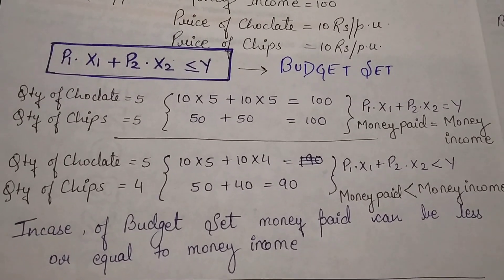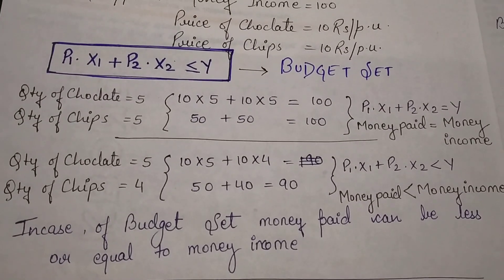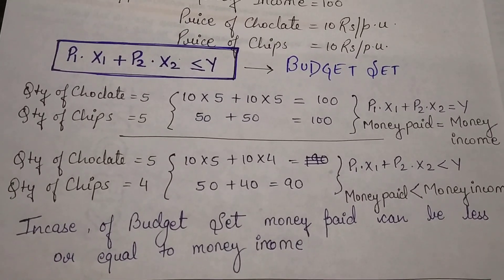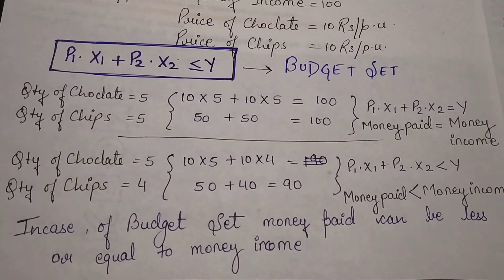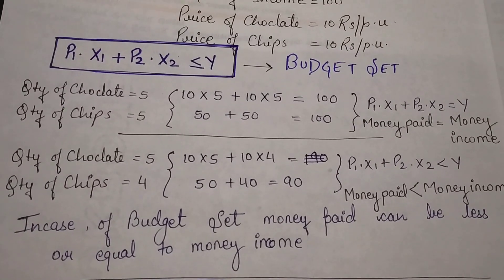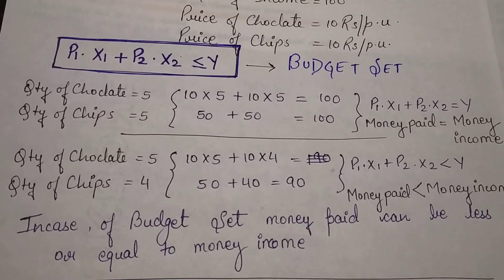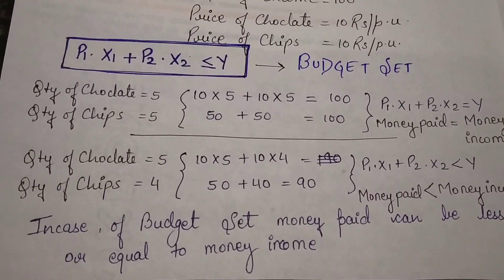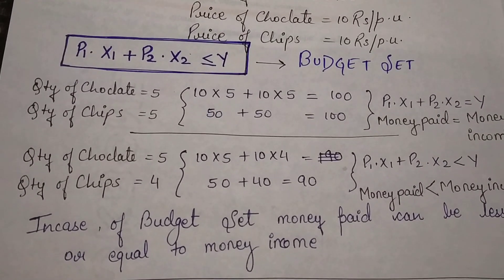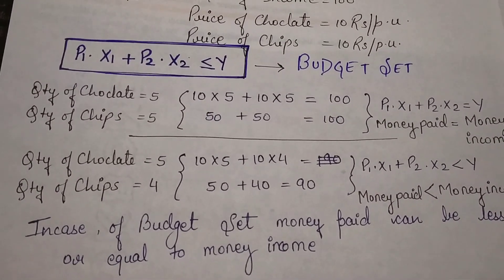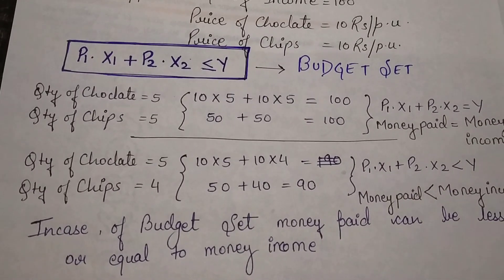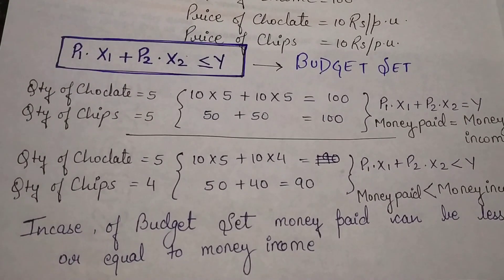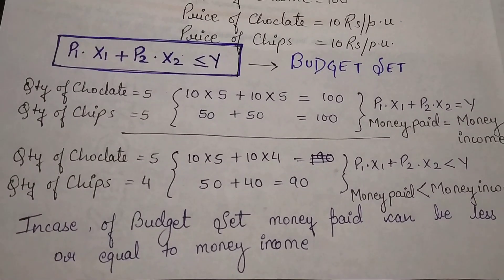So in case of budget set, the money paid can be less than or equal to money income. If you want you can save some amount of money, and if you want you can spend the complete money. You can spend 99 or 100, but if you want to spend 101 then you can't, because that is out of your boundary - it is not in your budget.